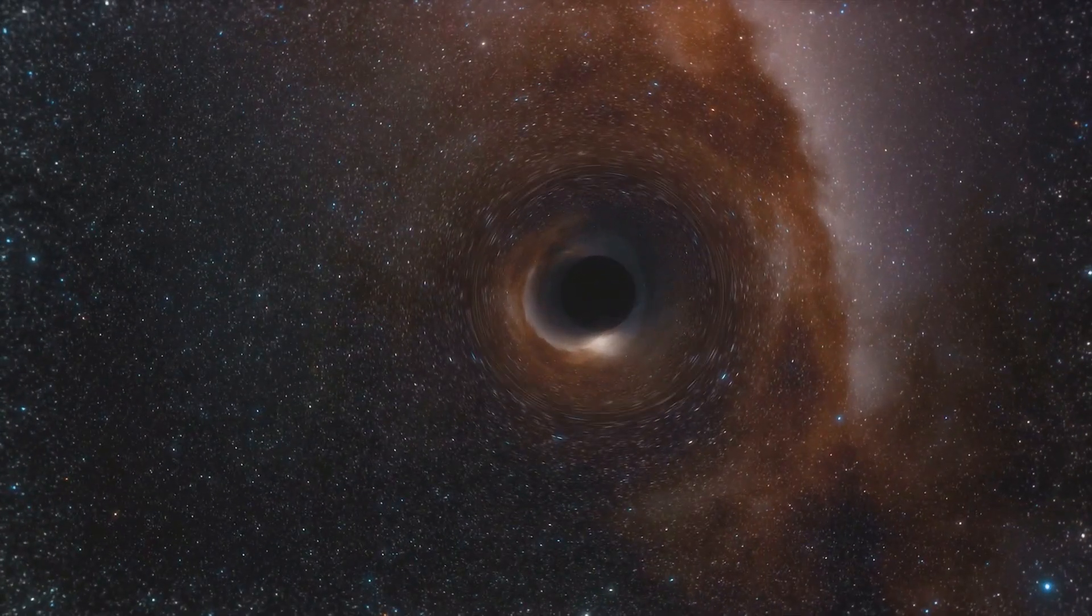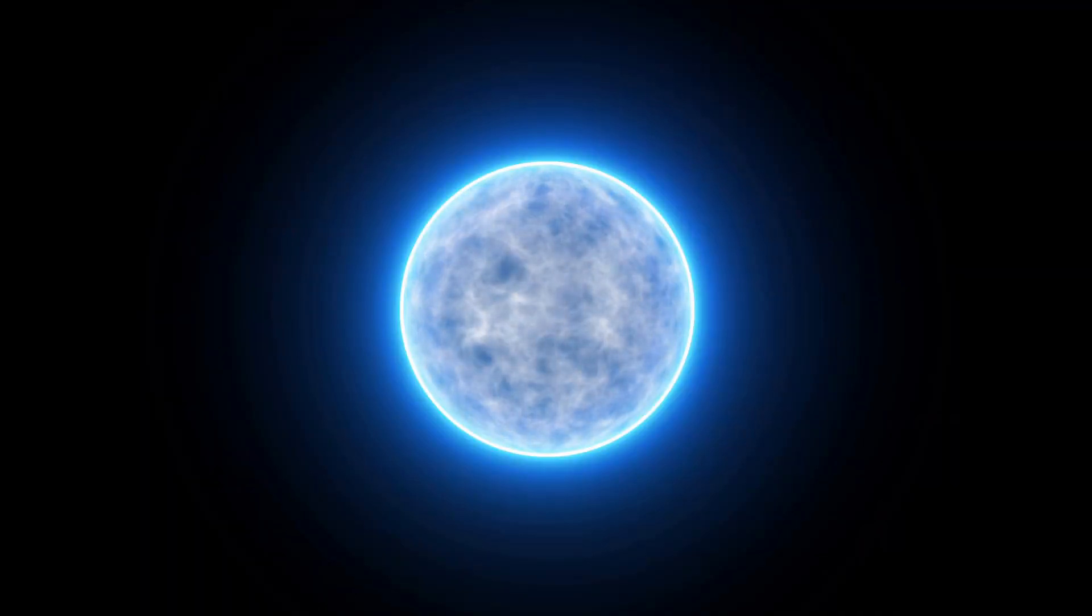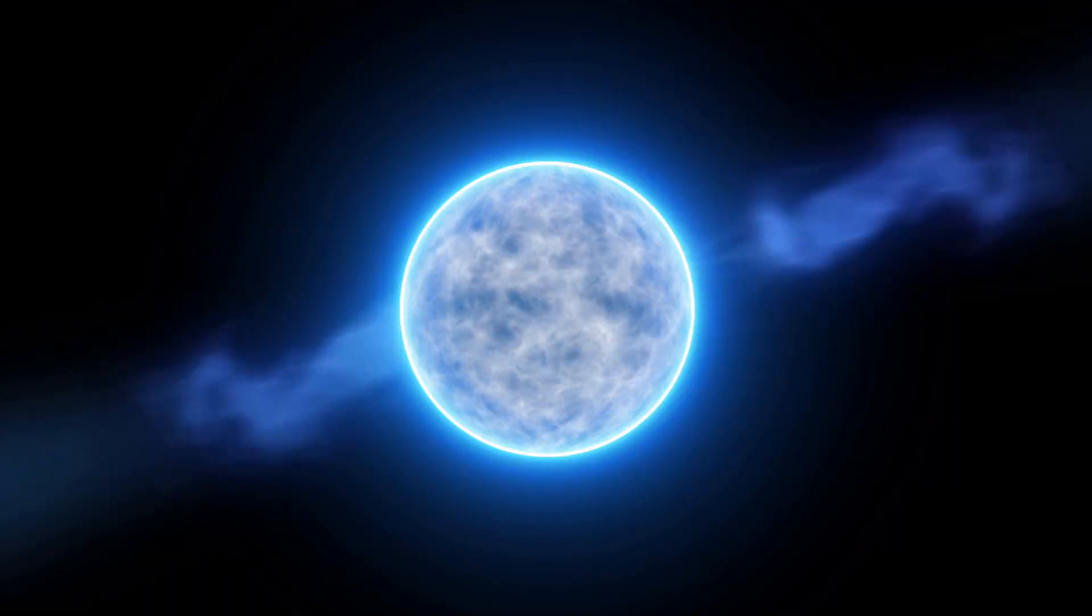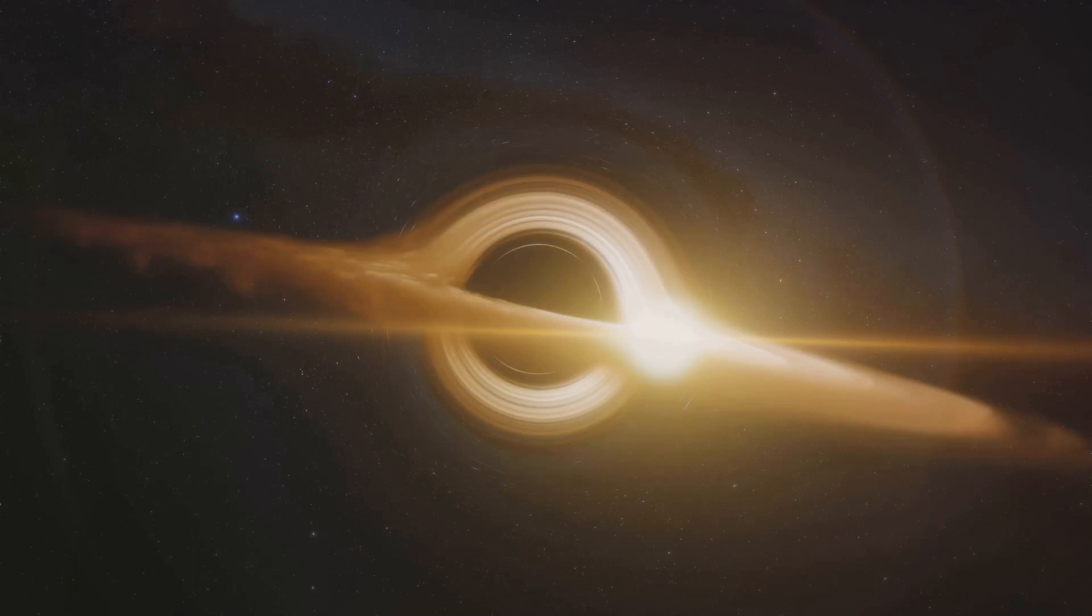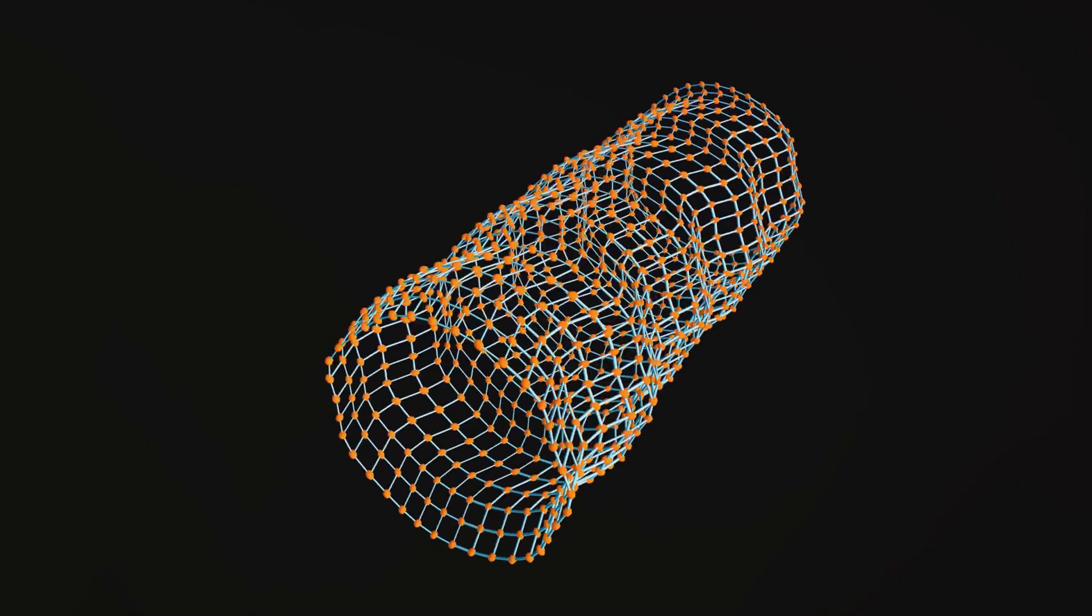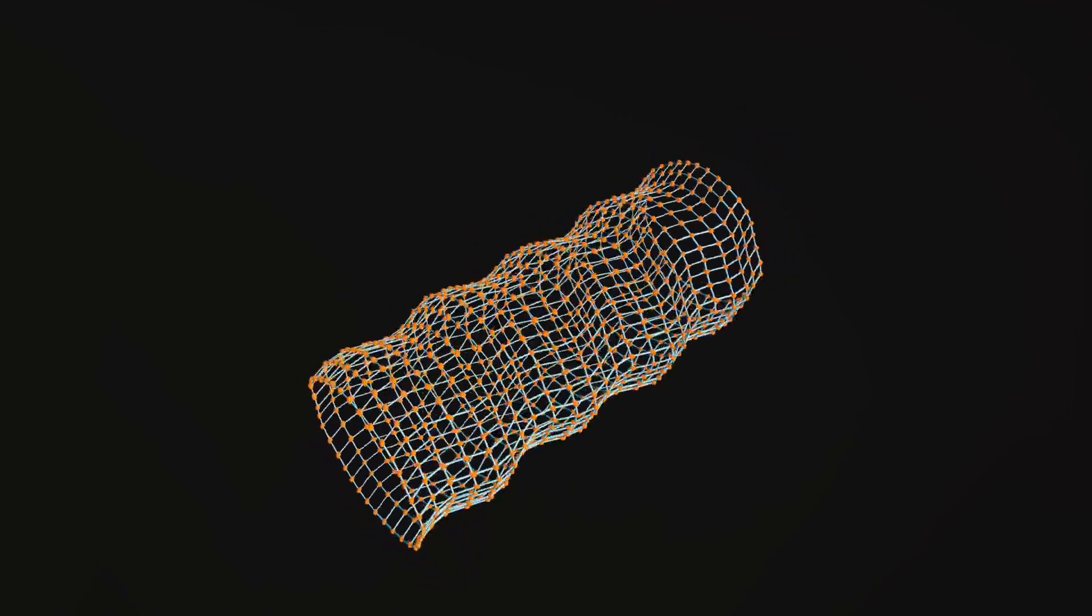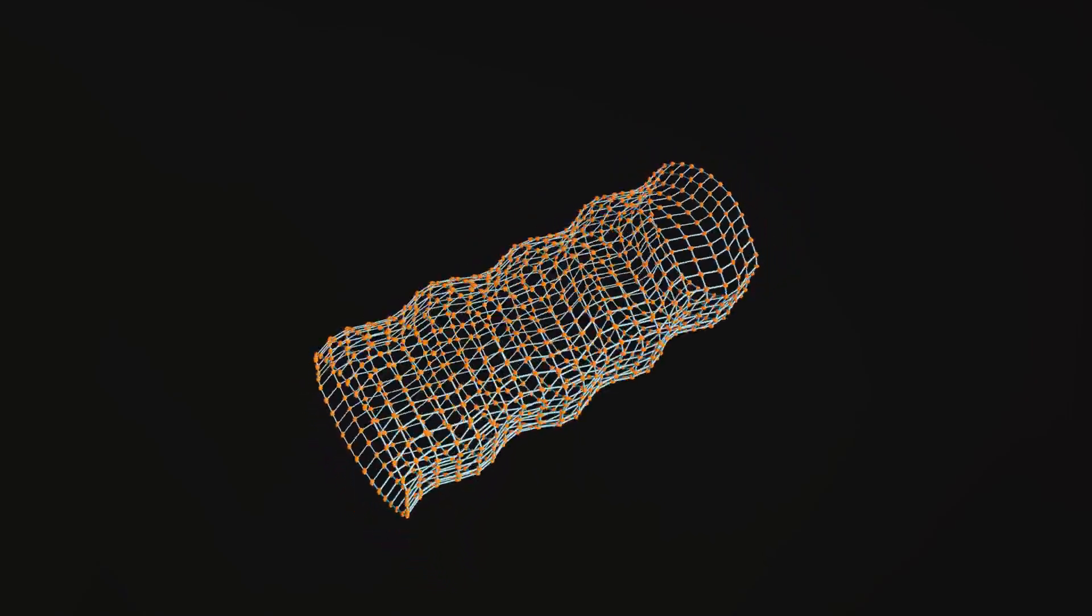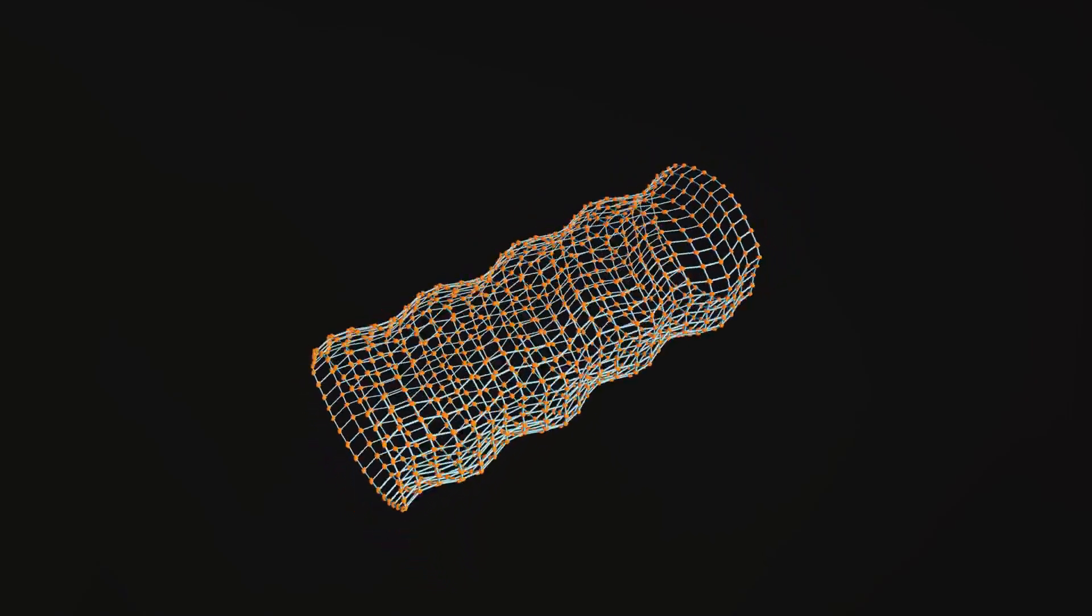But where do these gravity waves come from? What cosmic events could possibly create such powerful ripples in space-time? Well, the answer lies in the dramatic and violent events of the cosmos. Imagine two black holes spiraling towards each other, their immense gravitational pull creating waves that ripple across the fabric of space-time.